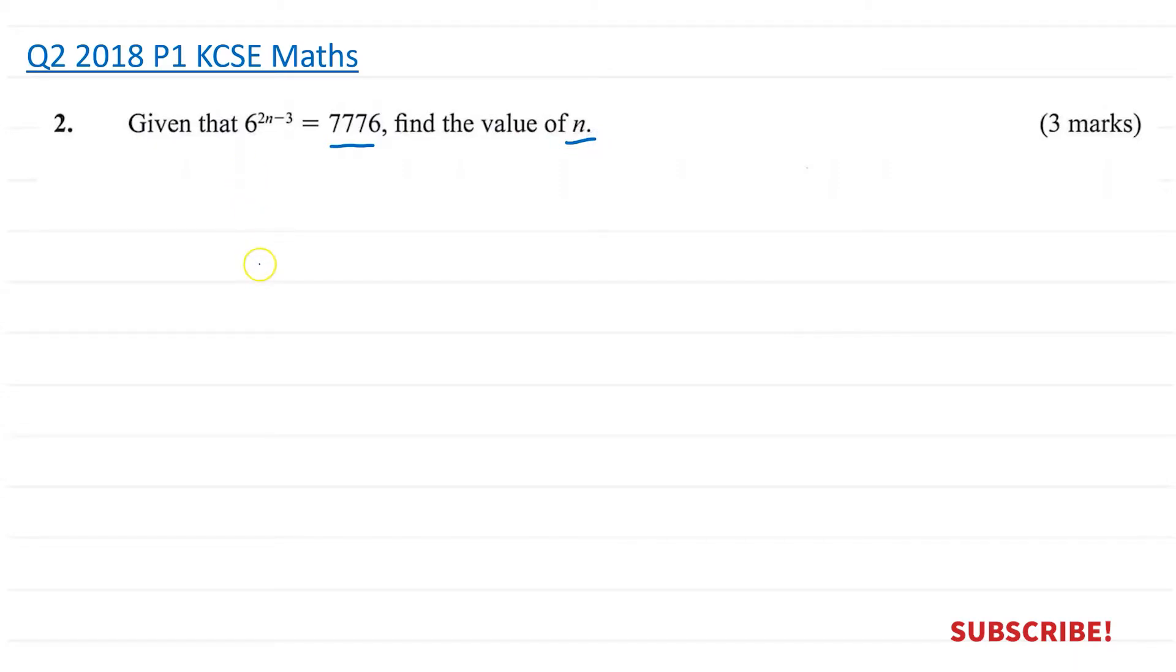Right, so we are doing indices here or exponents. This means you're given this number here, the base is 6. Now, is there a way of turning this number to the base 6? And of course there is. This is normally the hint.